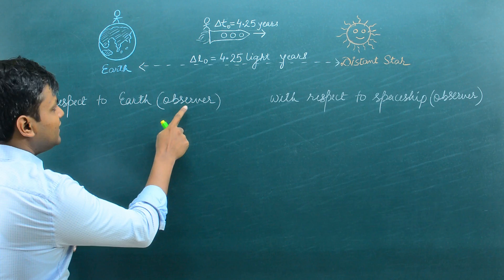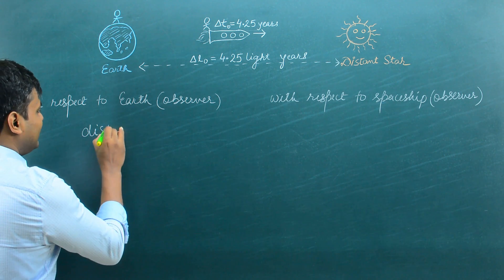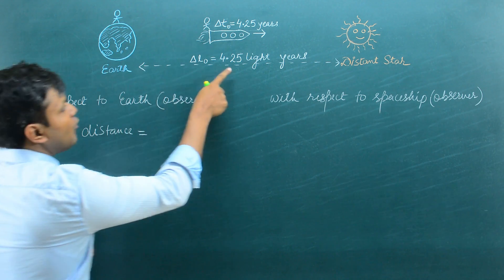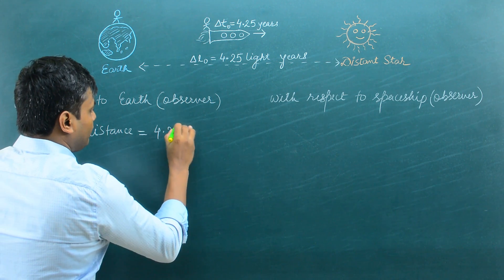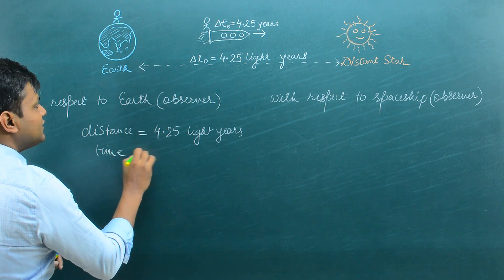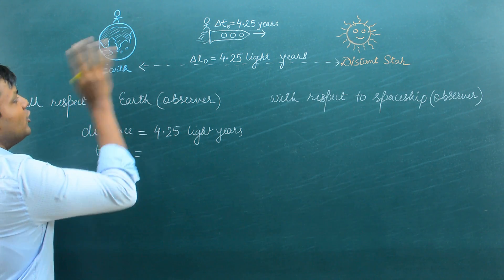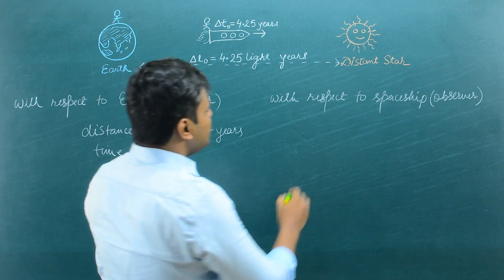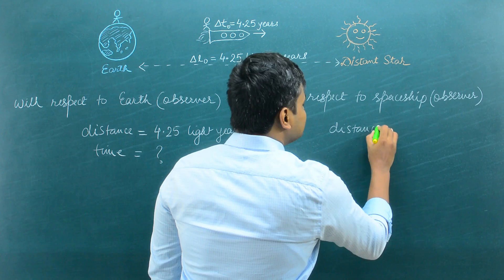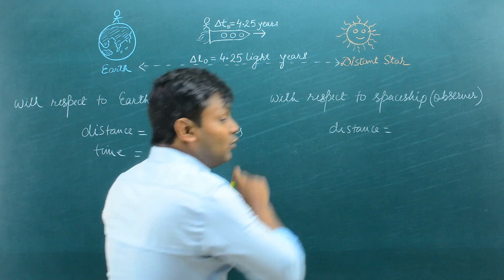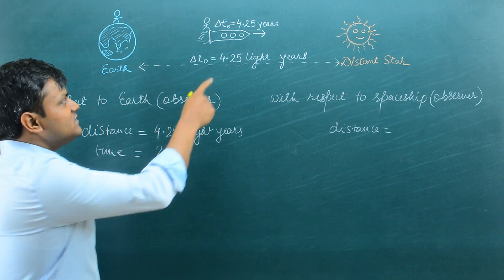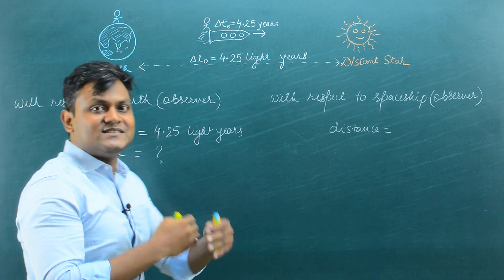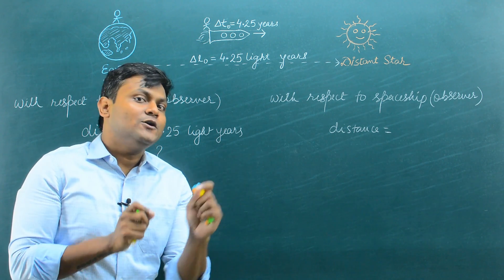With respect to an observer on Earth, the distance is already given to us: 4.25 light years. What about the time with respect to an observer on Earth? That is not given in the question, so that is a question mark. With respect to the spaceship, because the spaceship is moving, the length measured with respect to the Earth is not the same as the length measured by the spaceship — length contraction happens.